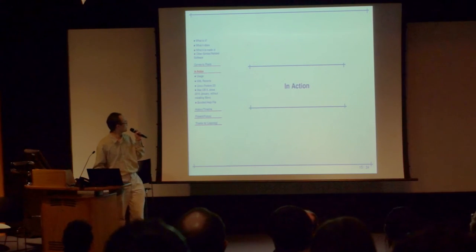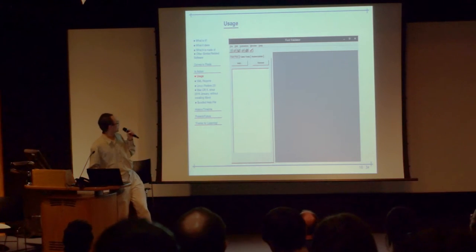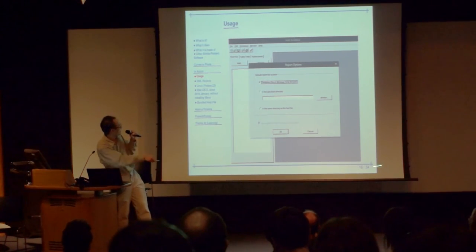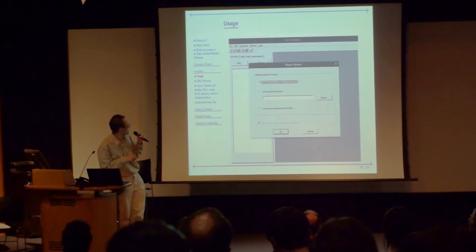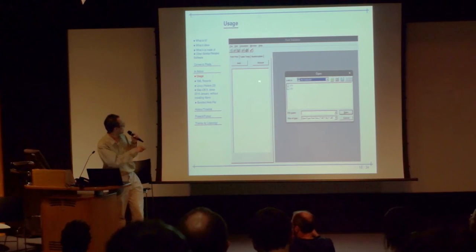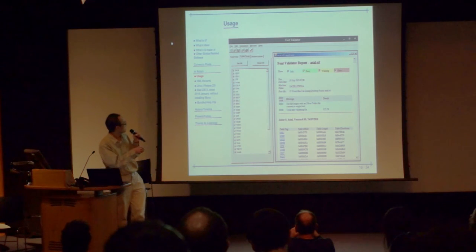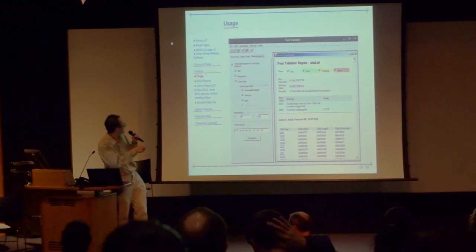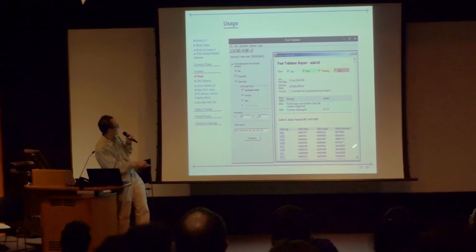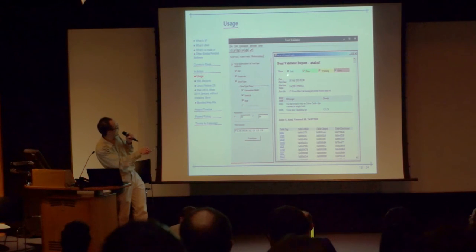Now let's look at the font validator in action. This is the interface — you open it and start. You look at the report options and can choose where to save the report afterwards. The default is to display it in the XML viewer panel, but that's not quite working on Linux yet, so most people should save it to a location to view afterwards. You can test multiple fonts and add all of them in one go, select different tables for testing, and scroll down to options for rasterization — whether you want to test black-and-white rendering, greyscale, or just one of them. You can also choose to only see information, warnings, or errors.